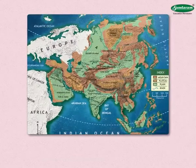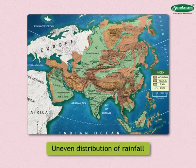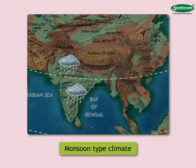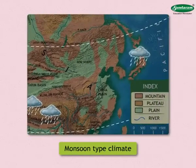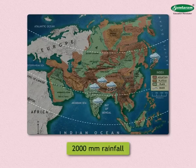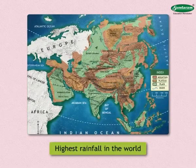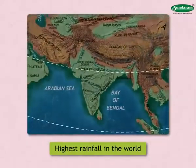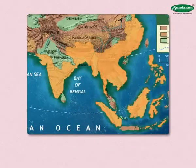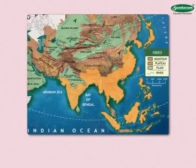It rains mostly in summer in the continent of Asia. The distribution of rainfall is also very uneven. Monsoon-type climate is found in the Indian subcontinent, South China, and Japan. In some areas of these regions, it rains more than 2000 millimetres. The highest rainfall in the world is at Mawsynram in India. Except for South and Southeast Asia, and to some extent East Asia, the average annual rainfall in other regions is less than 500 millimetres.